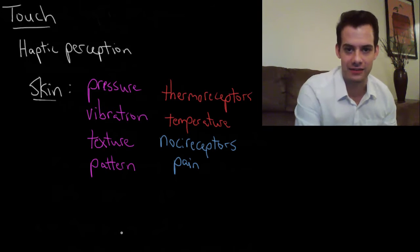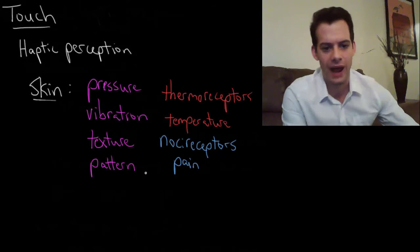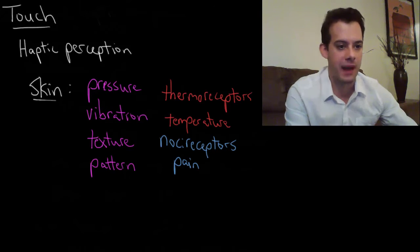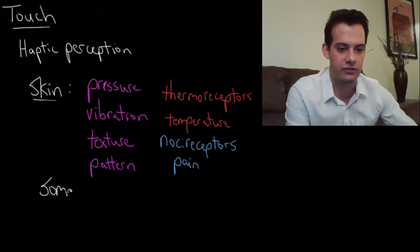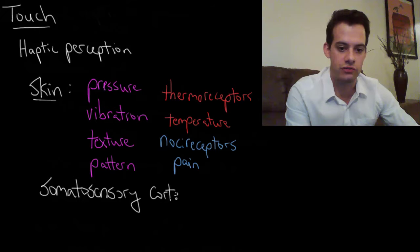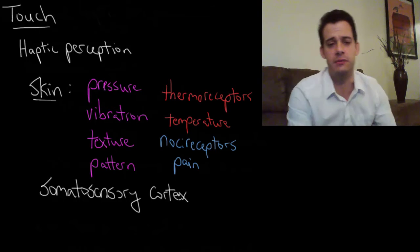So we have a number of different things we can detect on the skin surface. So then what happens is all of these messages go up the spinal cord and they get to the brain. And they get to a region called the somatosensory cortex.